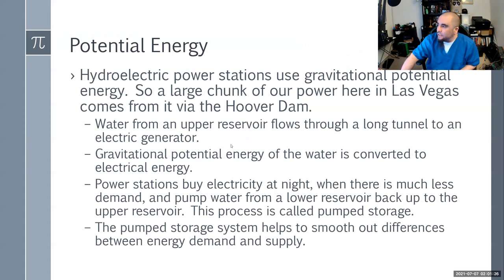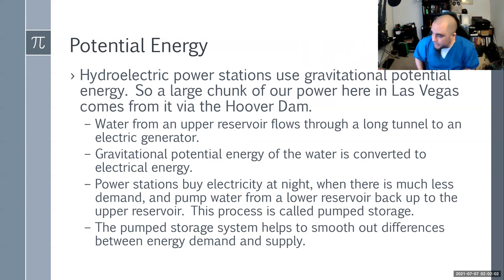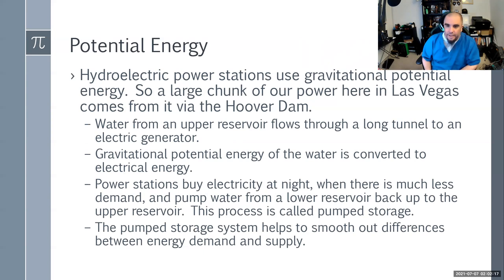Hydroelectric power stations use gravitational potential energy. Much of Nevada's power comes from the Hoover Dam — water flows from the upper reservoir down a tunnel to an electric generator, converting gravitational PE into kinetic and electrical energy. Power stations buy cheap electricity at night to pump water back up into the reservoir — a process called pump storage — smoothing out differences between energy supply and demand. Lake Mead's reservoir levels are a concern for the long-term electricity supply of Las Vegas.